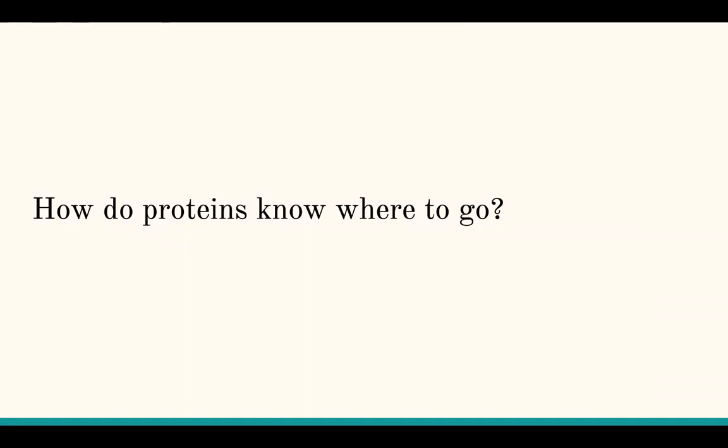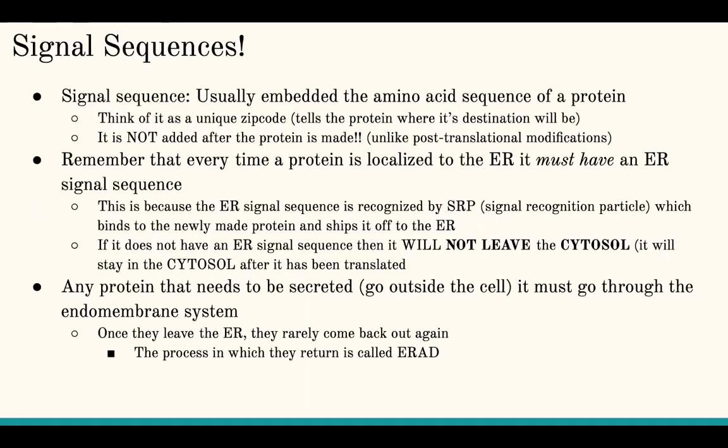Now I'm going to talk about how proteins know where to go. Proteins know where to go because they have signal sequences. Think of signal sequences like a zip code — when you post something in the mail, you put the address or zip code. Signal sequences are like a tag, an amino acid sequence embedded in the protein that tells the protein where its final destination will be. Signal sequences are built within the protein during translation, so they're not added after the entire protein has been made.